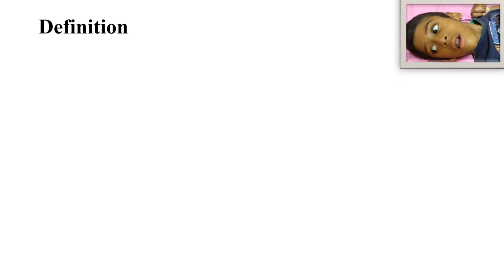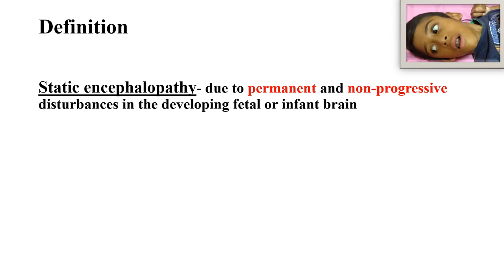Definition of cerebral palsy: cerebral palsy is a static encephalopathy. It is due to permanent and non-progressive disturbance in the developing fetus or infant brain. Whenever we make the diagnosis of cerebral palsy, we have to rule out all other conditions in which acute or progressive damage to the brain occurs — for example, acute encephalopathy due to infection, poisoning, or neurodegenerative disorders.